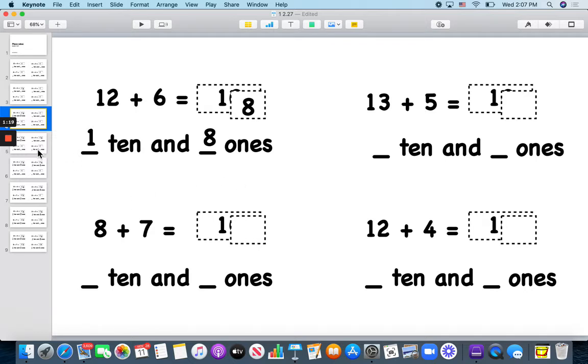Here we have 13 plus 5. 13 plus 5 is also 18. 13, 14, 15, 16, 17, 18.